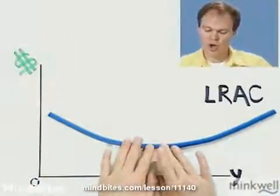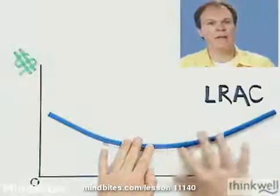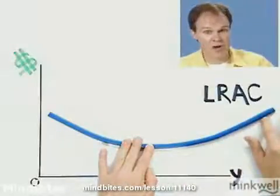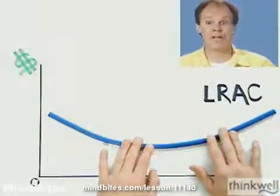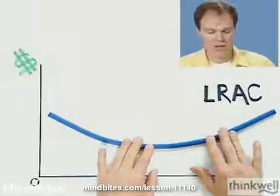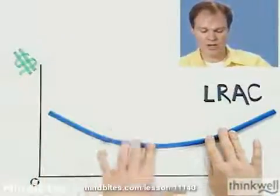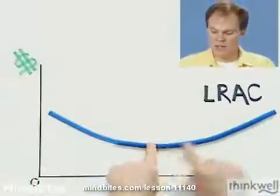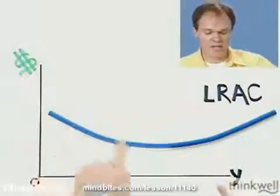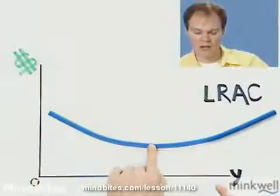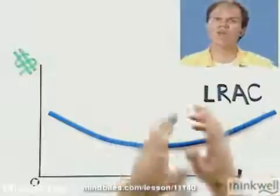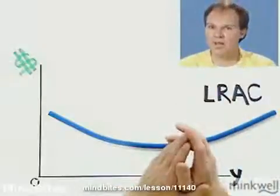Finally, if you go beyond that point, you have increasing average cost, which is a signal of decreasing returns to scale. So here, the firm has increasing, then constant, then decreasing returns to scale — meaning decreasing average cost, a moment of constant average cost, and then increasing average cost.